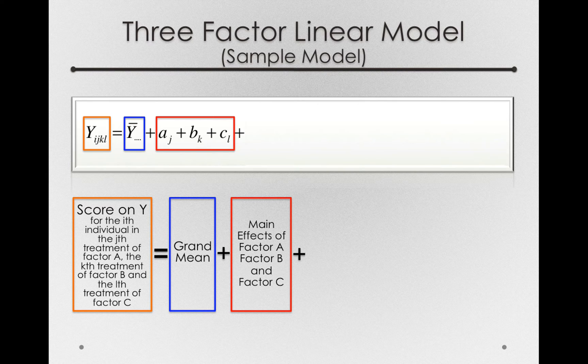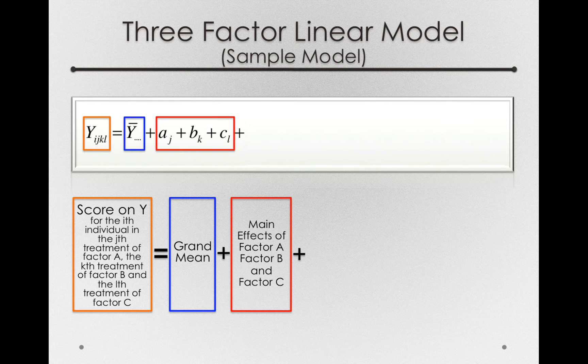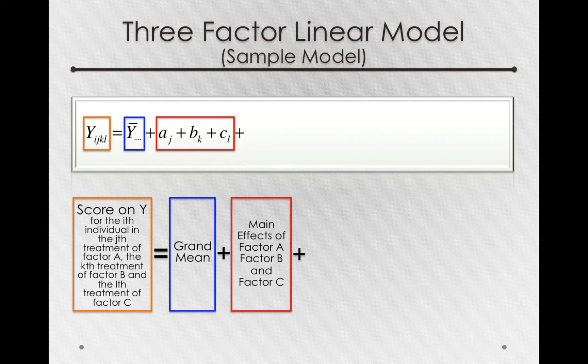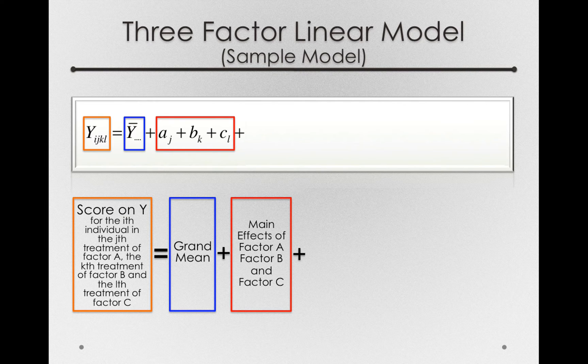We'll next have a group of terms that represent the two-way interactions. Remember, in our two-factor linear model, we only had one interaction, the degree to which A effects depended on B, or the degree to which B effects depended on A. In a three-factor model, we'll actually have three interactions.